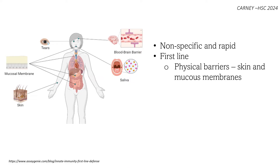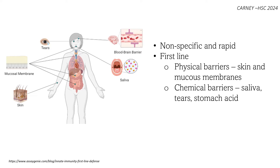Physical barriers include the skin and mucous membranes that line the respiratory, digestive, and reproductive tracts. Chemical barriers include saliva, tears, and stomach acid.